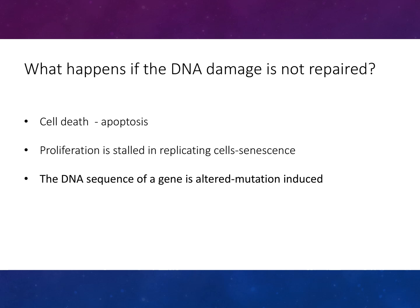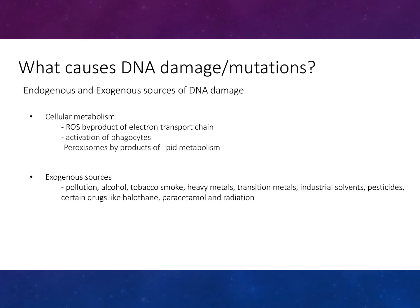If DNA damage is not repaired, cell death occurs by apoptosis, proliferation is stalled in replicating cells — known as senescence — and the DNA sequence of a gene is altered, resulting in a mutation.